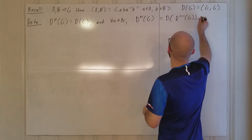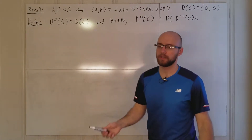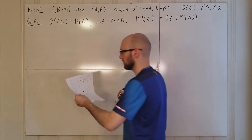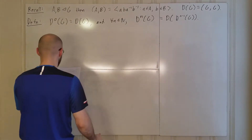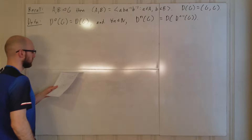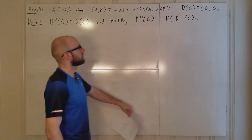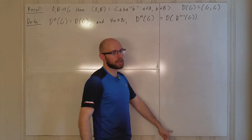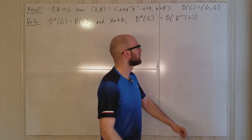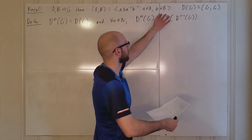So D⁰ is applying D one time and Dⁿ is applying D n+1 times. We know from our previous result that Dⁿ(G) is a normal subgroup of D^(n−1)(G).